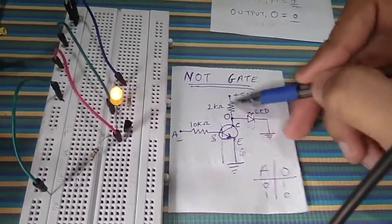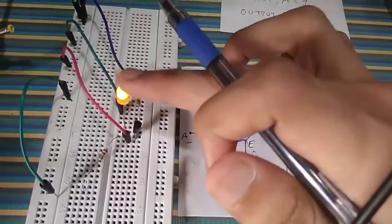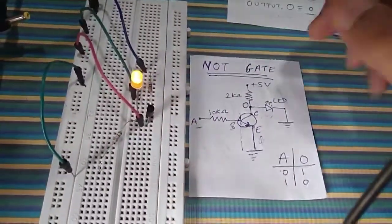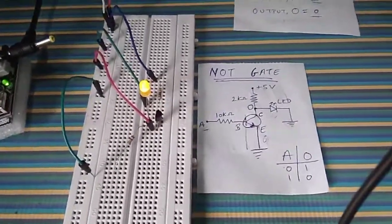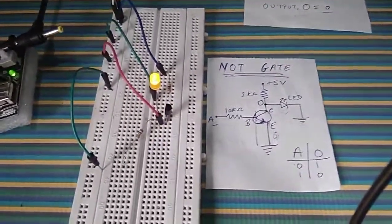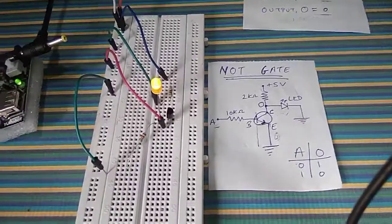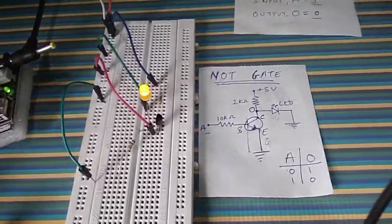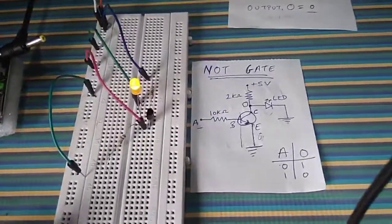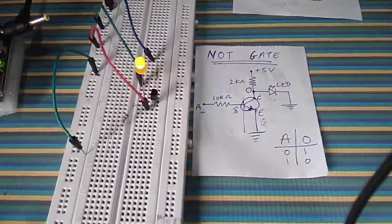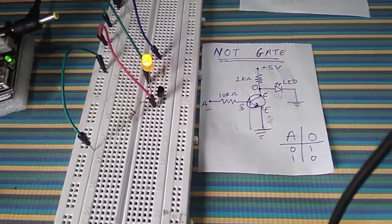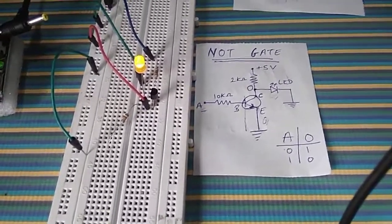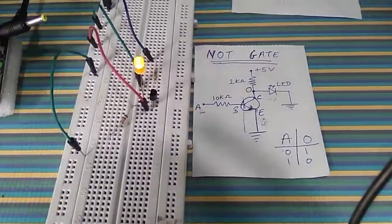You can also increase or decrease the value of the resistor to change the brightness of the LED. This was the working of a NOT gate using an NPN transistor. You can also use a PNP transistor and make the same circuit. Thank you for watching — like, comment, share, and subscribe.